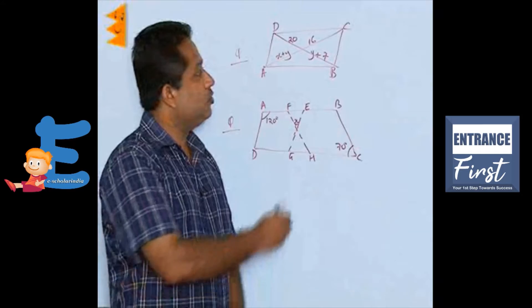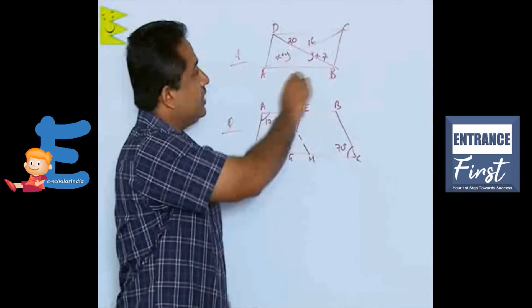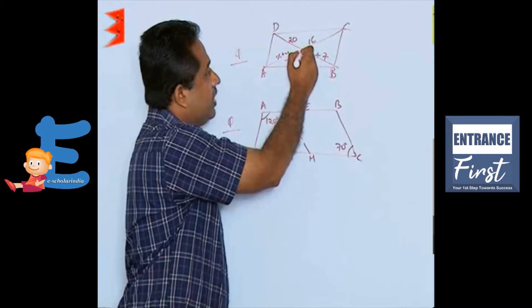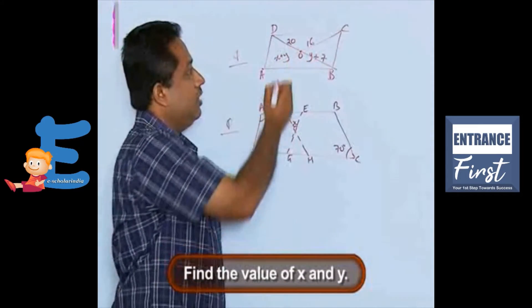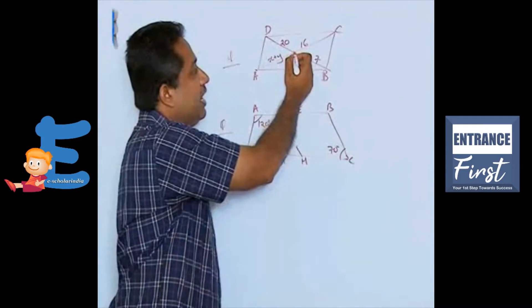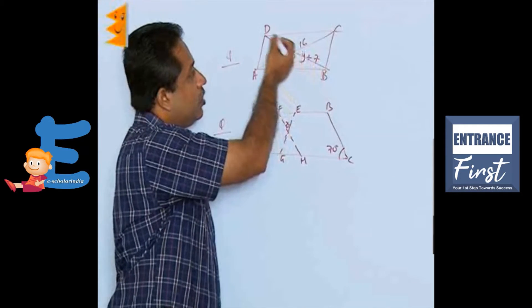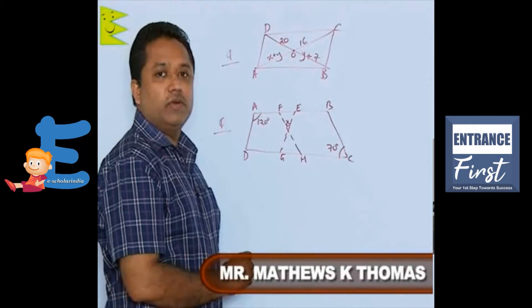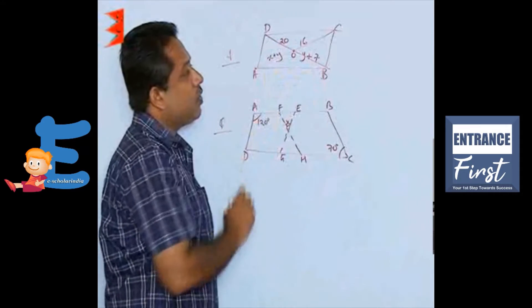Let us look at the next two questions. The first: ABCD is a parallelogram, AC and BD are the diagonals intersecting at point O. Find the values of X and Y. The length of OA is X plus Y, OC is 16, OB is Y plus 7, and OD is 20. Using the properties of a parallelogram, we have to find the values of X and Y.